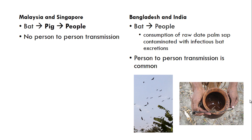The virus has two patterns: one causing disease in Malaysia and Singapore, and one very common in Bangladesh and India. In Malaysia and Singapore, the virus is mainly contracted from infected pigs — bats infect pigs, pigs infect people — and person-to-person transmission is not that common.